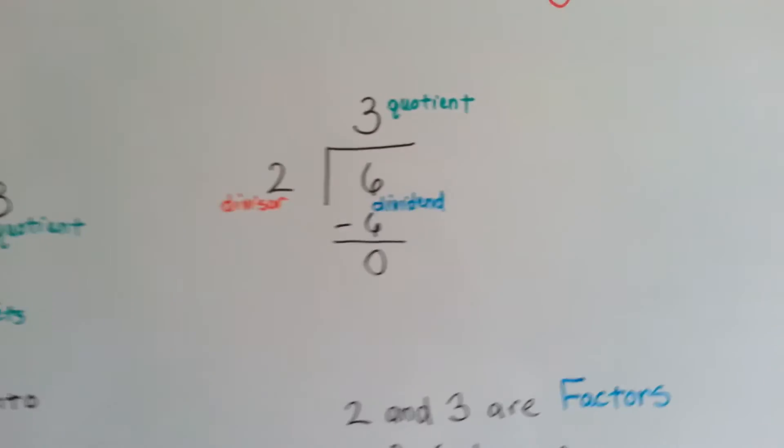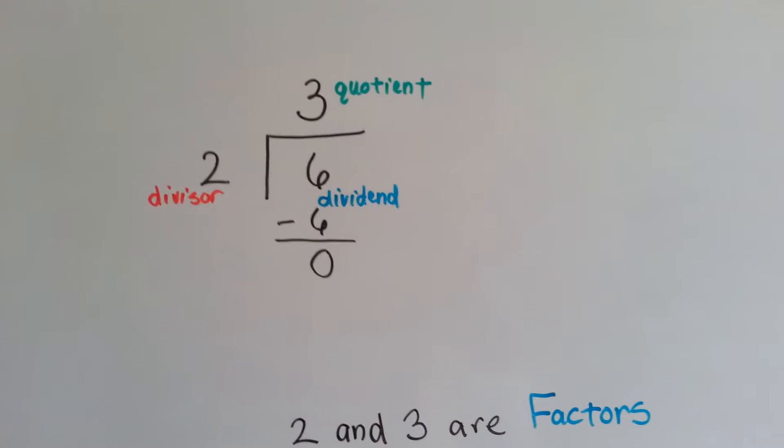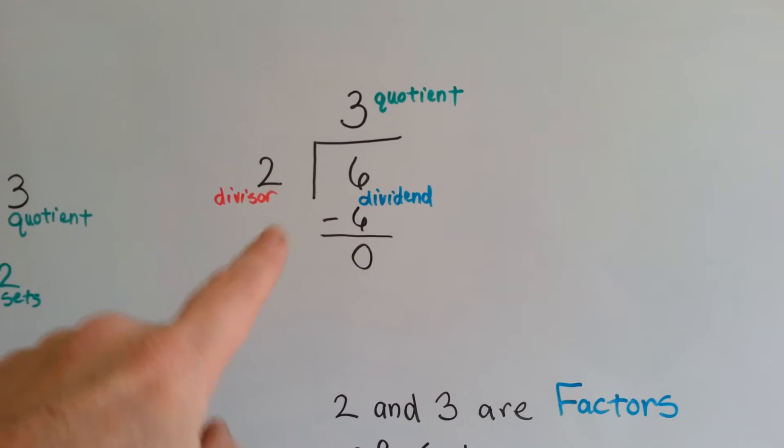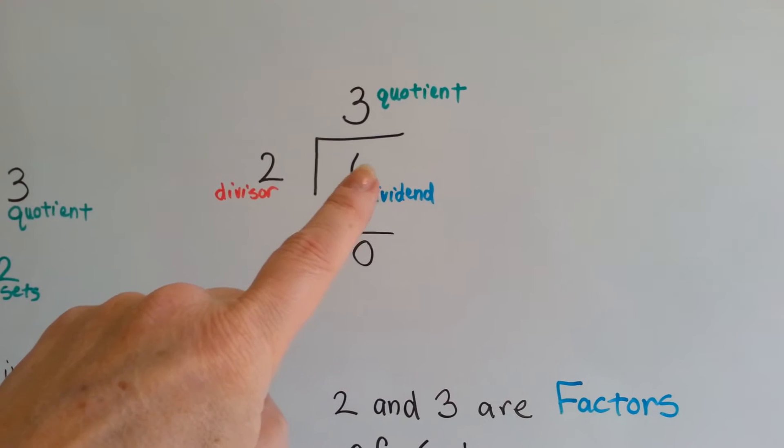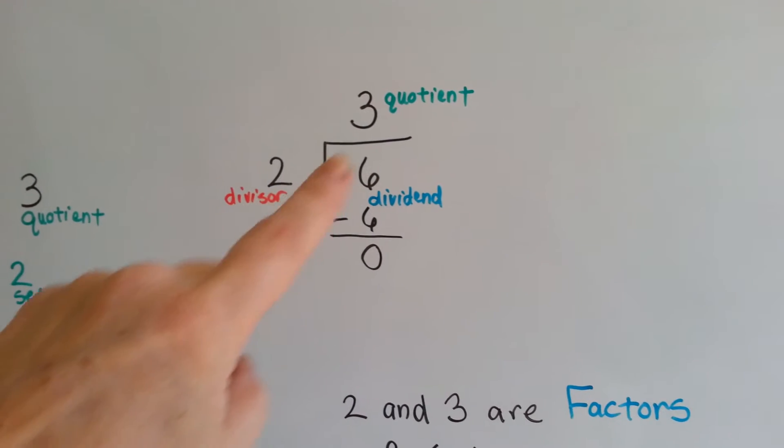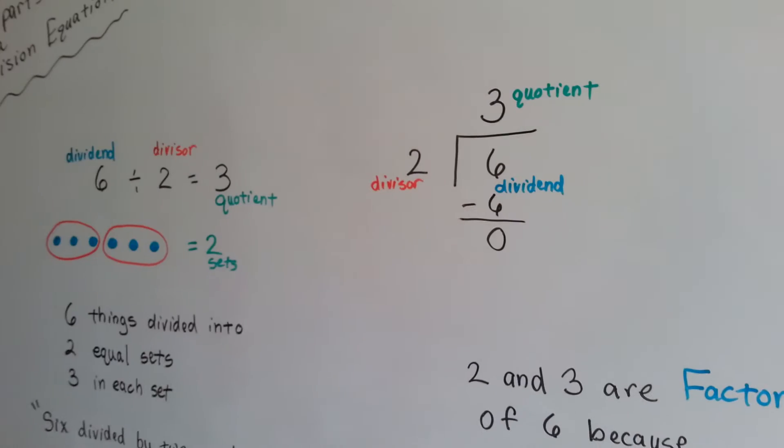In a long division problem, which is written this way, we have half of a square, and on the inside is the dividend with the divisor on the outside, and the quotient is written on top.